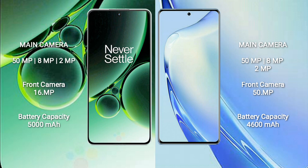OnePlus Nord 3 has a 16MP front camera. Vivo V27 also features a rear triple camera setup of 50MP plus 8MP plus 2MP, but with a significantly upgraded 50MP front camera.